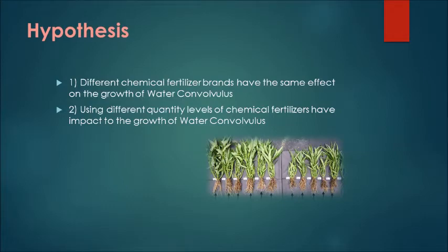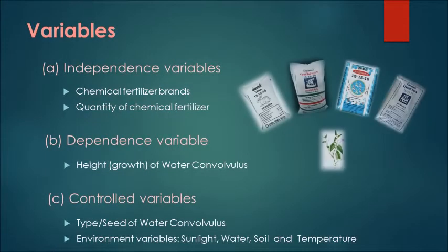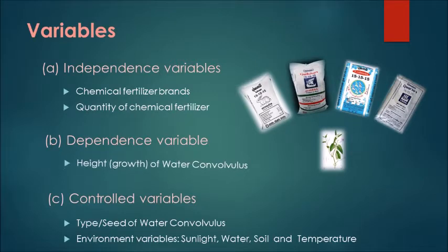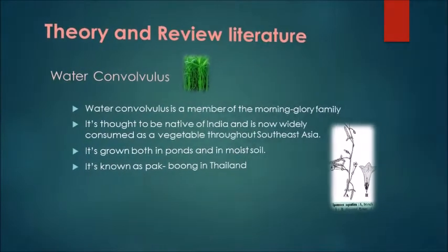Variables: Independent variables are chemical fertilizer brands and quantity of chemical fertilizer. Dependent variable is height of water convolvulus. Control variable is type of water convolvulus. Environment variables such as sunlight, water, soil, and temperature.